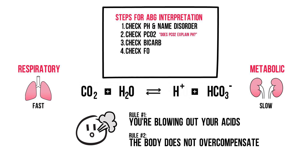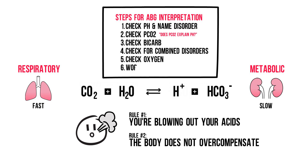Step 4: Check for combined disorders — I might get into this in a future video if you're interested. Step 5: Check oxygen. But that's not part of the Henderson-Hasselbalch! Well, you're correct, but it could explain causes for a respiratory alkalosis, as explained in the next video. Step 6: Work out the disorder. We'll go through the different acid-base disorders in the next couple of videos.